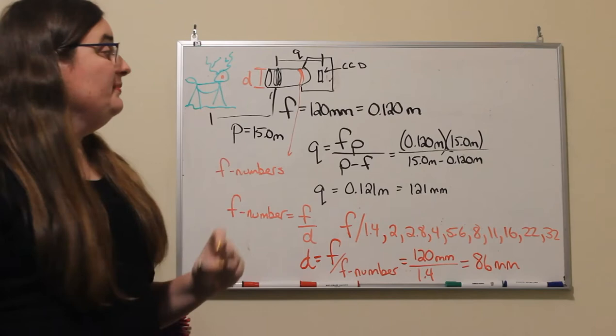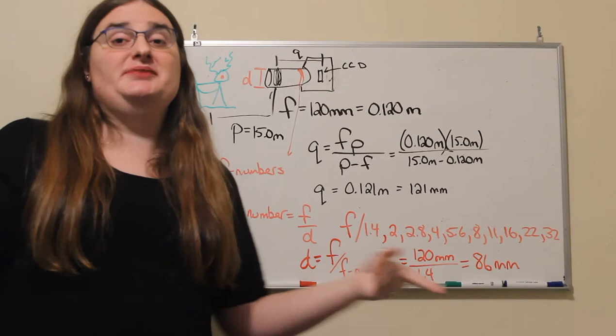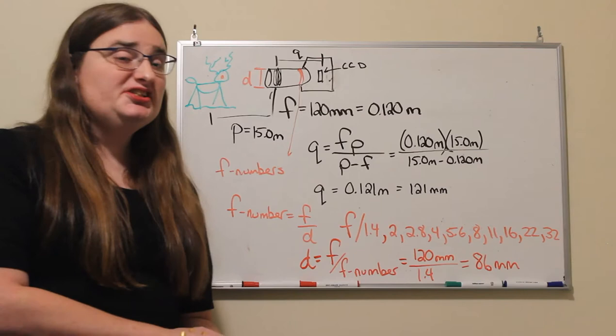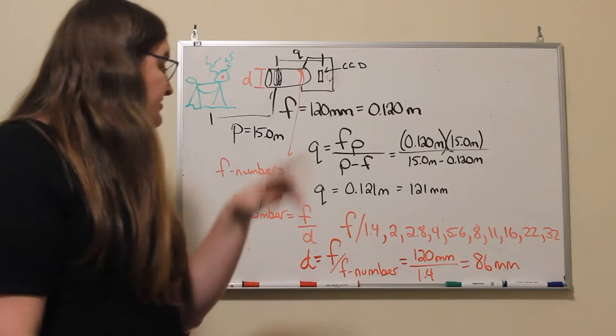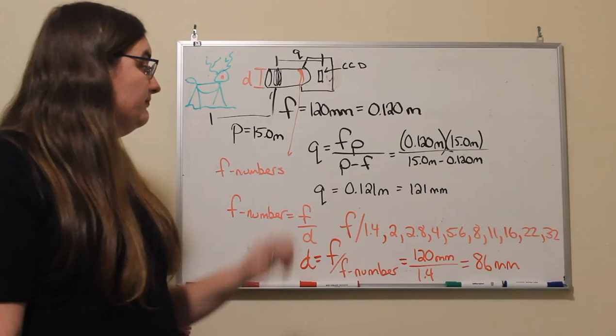From our image equation, one over q is going to be one over f minus one over p. Our focal length here, we're creating real images, that's the only way we can capture something with a camera, so we're going to have positive focal distances. Inverting that equation, solving for the image distance q is our focal length times our object distance divided by our object distance minus the focal length. So 120 millimeters is 0.120 meters times 15 meters divided by 15 meters minus 0.120 meters.